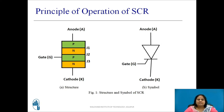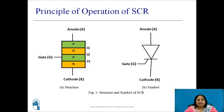The figure shows the structure and symbol of SCR. The SCR is a four-layered P-N-P-N switching device having three junctions J1, J2, and J3. It has three external terminals: anode, cathode, and gate. The gate terminal is taken out from the P-layer near to the cathode and hence it is also known as cathode gate. The anode and cathode are always connected to the main power circuit, and the gate terminal is used to turn on the SCR by passing a gate current from gate to cathode.